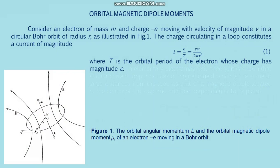Consider an electron of mass m and charge minus e moving with velocity of magnitude v in a circular Bohr orbit of radius r, as illustrated in figure one. The charge circulating in a loop constitutes a current of magnitude I = e/T = ev/(2πr), formula one, where T is the orbital period of the electron. In elementary electromagnetic theory, it is shown that such a current loop produces a magnetic field.